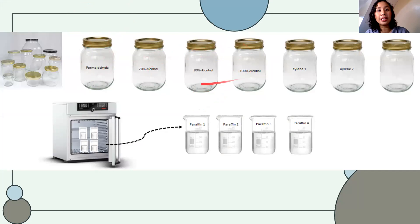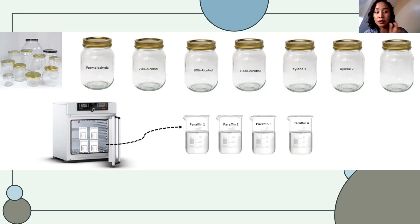After fixation is dehydration, where we submerge tissues in an increasing concentration of alcohol. Our goal is to remove the fixative and also the water inside your cells and tissues. Next, xylene is used for clearing. And paraffin is involved in infiltration and embedding.